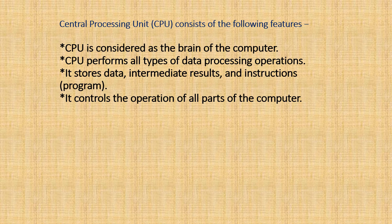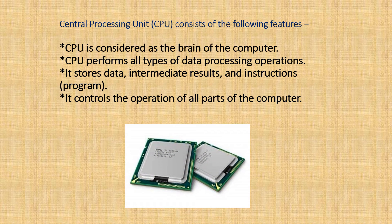The central processing unit, or CPU, consists of the following features. CPU is considered the brain of the computer, so whenever we say brain of the computer, we are talking about the CPU. CPU performs all types of data processing operations, stores data, intermediate results, and instructions, and it controls the operation of all parts of the computer, just like our brain does for our body.